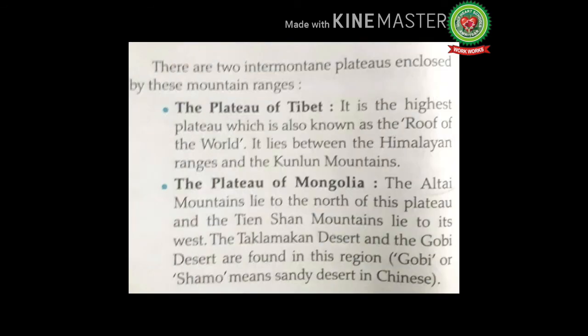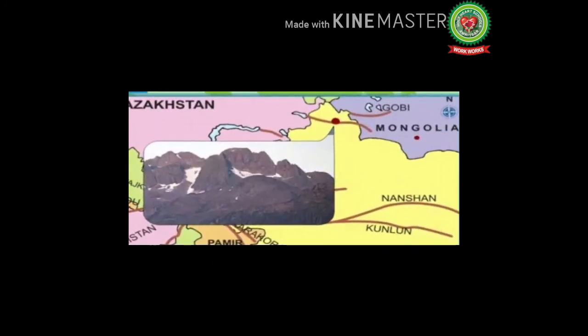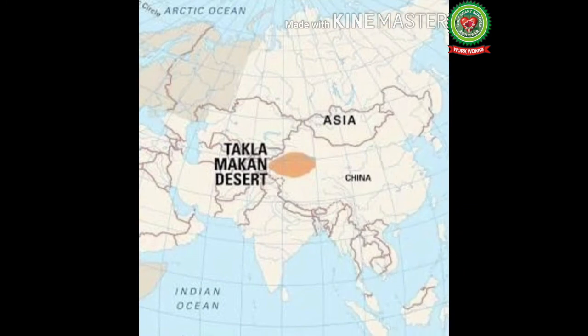The Plateau of Mongolia has the Altai mountains to the north and the Tianshan mountains to its west. The Taklamakan desert and the Gobi desert are found in this region. Mongolia has three main physical features: the Mongolian plateau, the highlands, and the Gobi desert. The Mongolian plateau covers almost two-thirds of central Mongolia. The Taklamakan desert is the world's second largest shifting sand desert, with about 85% made up of shifting sand dunes — also known as the 'sea of death.'